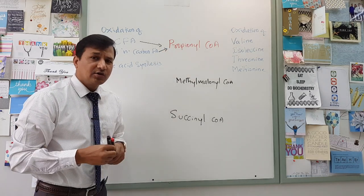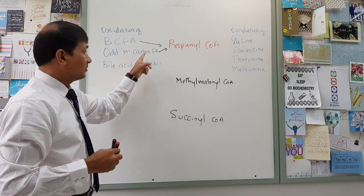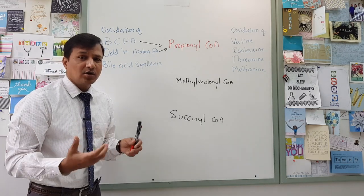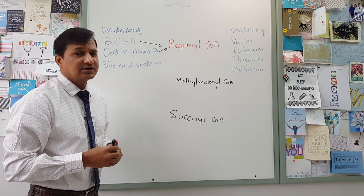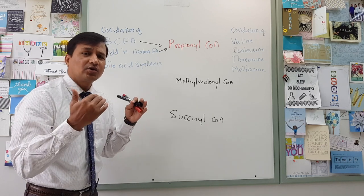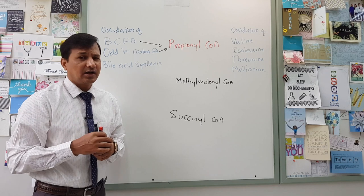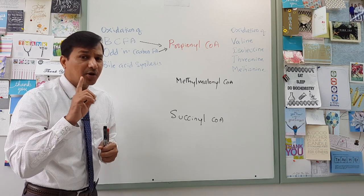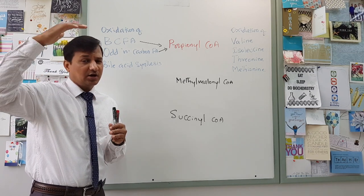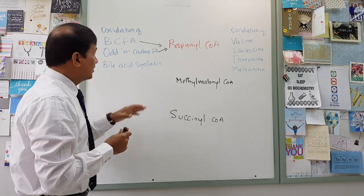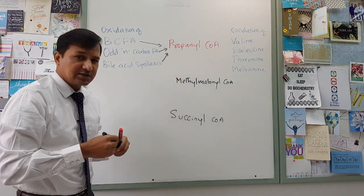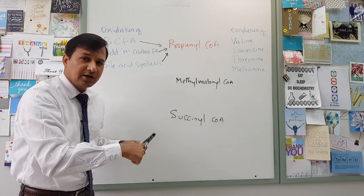You can take a look at that video on odd-number carbon fatty acid oxidation; the link is in the description below. Now, synthesis of bile acids — especially in the peroxisomes — is another source. During synthesis of bile acids, where 7-alpha hydroxycholesterol is converted into cholyl-CoA and chenodeoxycholyl-CoA, there will be release of Propionyl-CoA, because the hydrocarbon chain attached to the cholesterol molecule releases a 3-carbon compound, which is Propionyl-CoA.